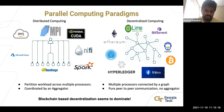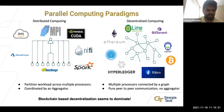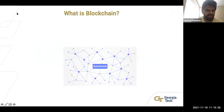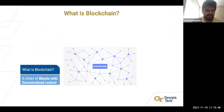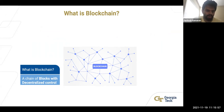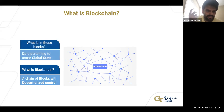Most decentralized computing platforms are now blockchain-based, and that is the revolution where people are starting to realize decentralization has many benefits. So what is the blockchain? It's nothing but a chain of blocks — there is no rocket science. The key concept is that control of these blocks is decentralized. Every block contains data pertaining to the global state during which the block was formed.